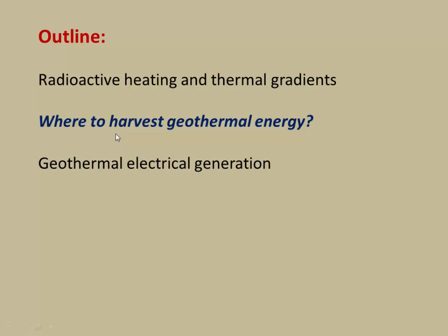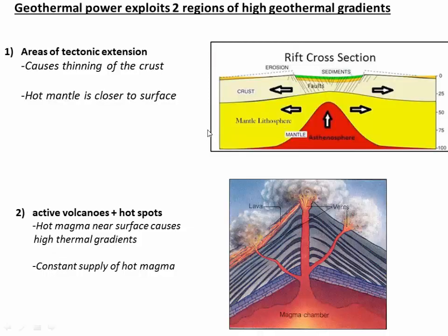Let's look at where we can get these high heat fluxes on Earth. Geothermal generation generally looks at two places. One is areas of tectonic extension — areas where the crust is pulling apart and as it does that, it thins. As it thins, the mantle is able to come up closer, and basically the hot mantle is closer to the surface. So we've increased the thermal gradient in areas of crustal thinning. Those are sometimes called rifts.